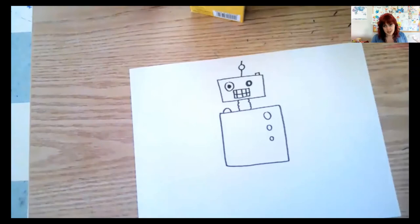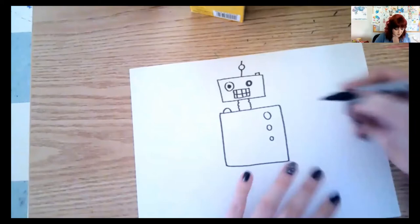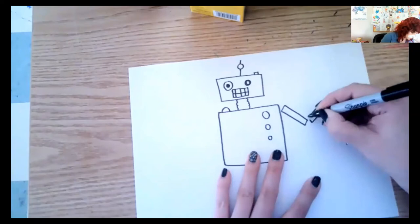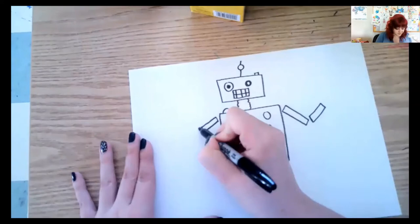Now for our robot's arms, we're going to do skinny rectangles for the top part of the arm and the lower part. So I'm going to go rectangle, rectangle, rectangle, maybe another one over here. Rectangle, rectangle.